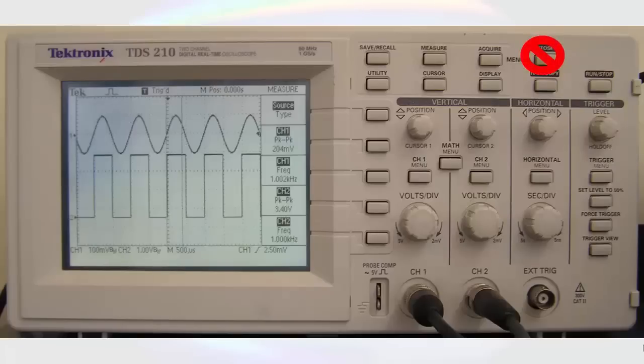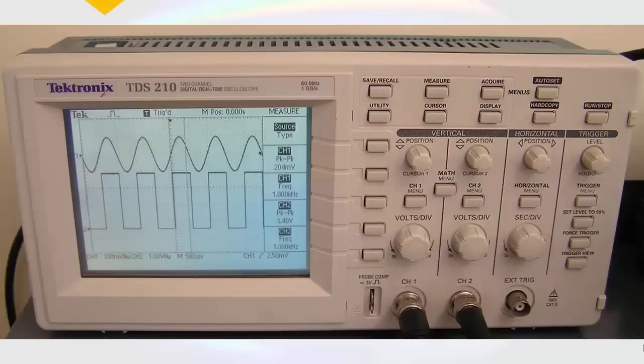This button is only necessary when we have no idea what to expect. Since we understand the relationship between period and frequency, and we have at least a basic idea of what our circuit is doing, we should always know what settings to manually put onto the oscilloscope, so that we should never use this button. This button is not for electrical engineering students.